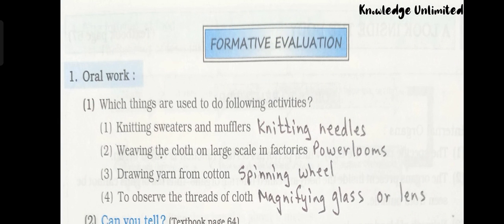Now let's see formative evaluation — oral work. Question number one: which things are used to do the following activities? Number one: knitting sweaters and mufflers — answer: knitting needles. Number two: weaving cloth on large scale in factories — answer: power looms. Third one: drawing yarn from cotton — answer: spinning wheel. Fourth one: to observe the threads of cloth — answer: magnifying glass or lens. So children, that's all for your lesson number 10, Clothes.